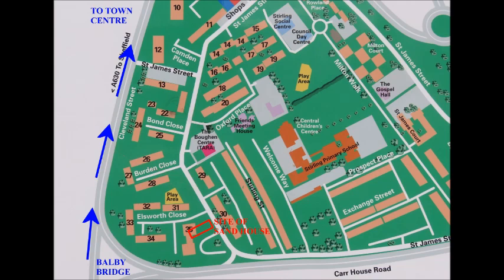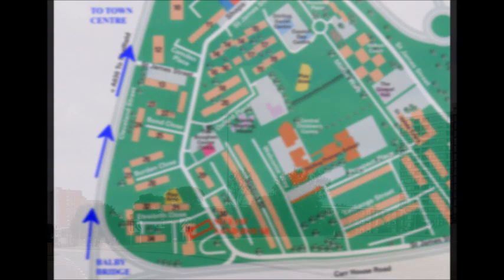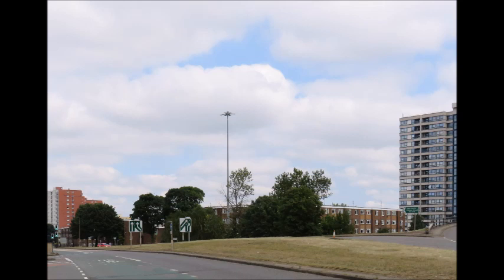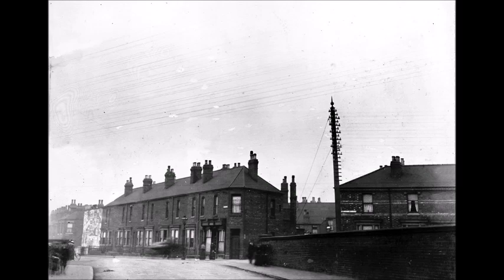This modern photograph was taken at Balby Bridge with the dual carriageway of Cleveland Street heading off to the left towards the town centre. The high rise block on the right is Silverwood House, marking the precise location where the Sandhouse once stood. This photo, taken at exactly the same point as the previous one, shows the layout as it was up until the 1960s.